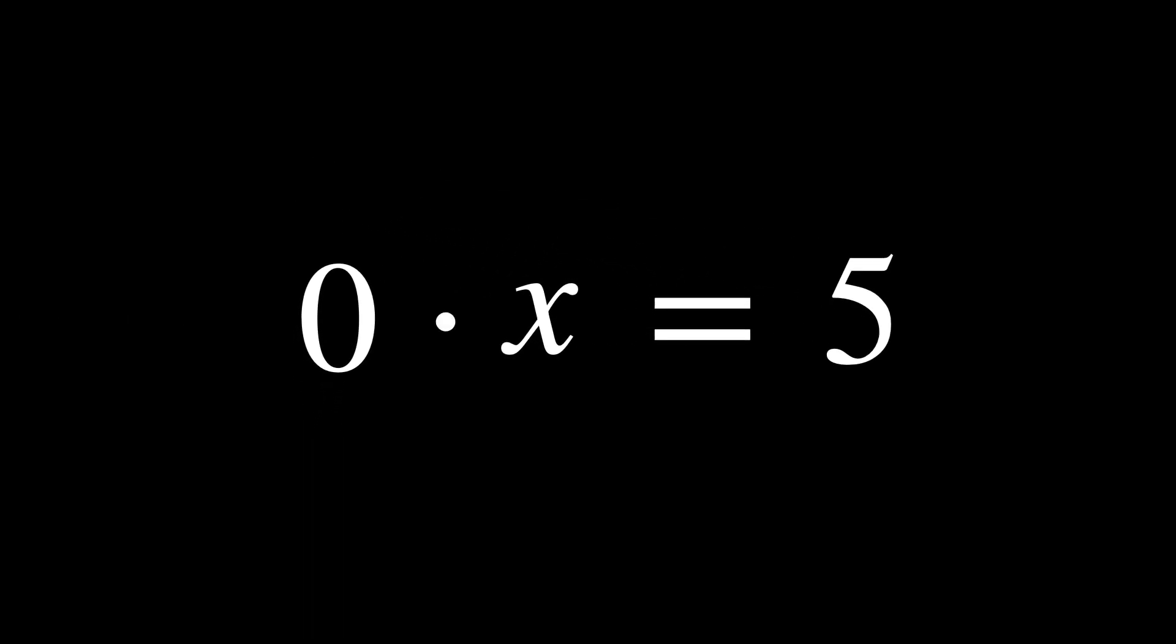Suppose we try to divide five by zero. Say we call the hypothetical outcome x. In order for that to be true, so must this expression: zero times x equals five. But anything times zero is equal to zero. So the outcome, whatever value we pick for x, would be zero equals five, which is of course not true.